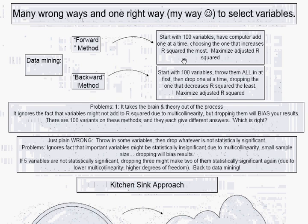In the forward method, you might have a hundred potential variables. You let computer programs run a hundred regressions, one with each variable. Then it picks the one variable that makes the adjusted R-squared go up the most, then picks a second variable, a third, and a fourth — continuing to pick one variable at a time that maximizes the adjusted R-squared. It stops when adjusted R-squared is as large as it can be. The backward method starts with all 100 variables thrown in and then drops one variable at a time — whichever one increases the adjusted R-squared the most — stopping when it's as large as possible.